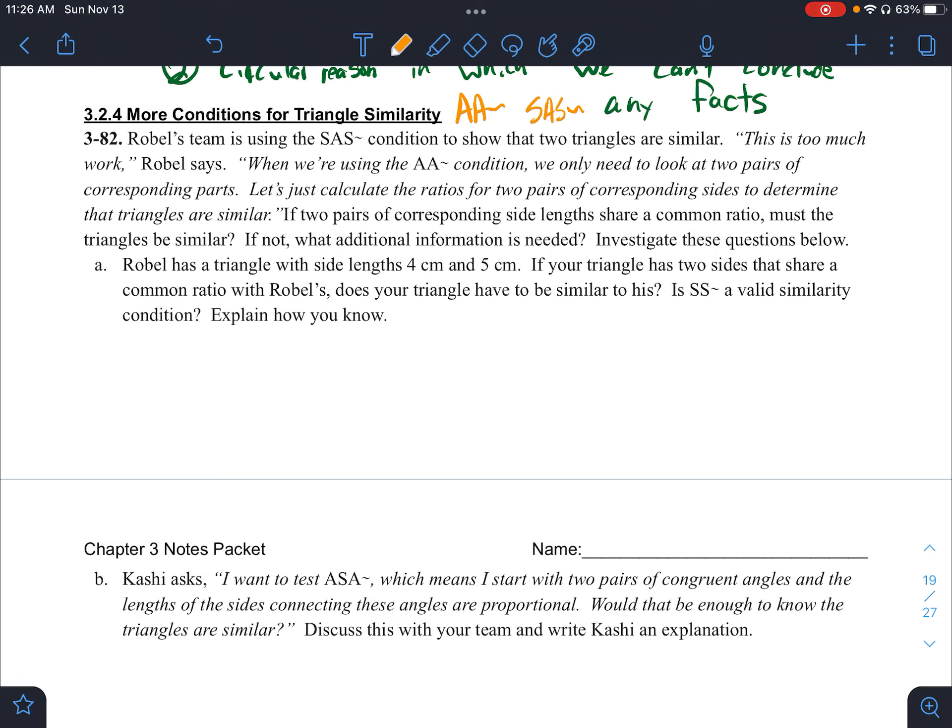So getting started with 82. It says Robel's team is using the side angle side similarity condition to show that two triangles are similar. This is too much work, Robel says. When we were using the angle angle similarity condition, we only need to look at two pairs of corresponding parts. Let's just calculate the ratios for two pairs of corresponding sides to determine that the triangles are similar. So it says if two pairs of corresponding side lengths share a common ratio, must the triangles be similar? If not, what additional information is needed? Investigate these questions below.